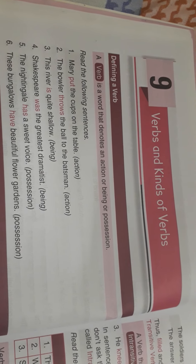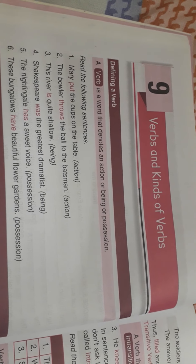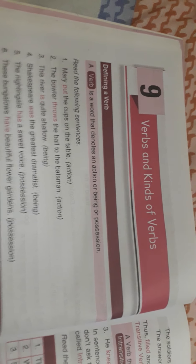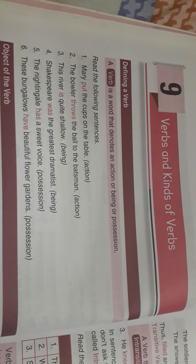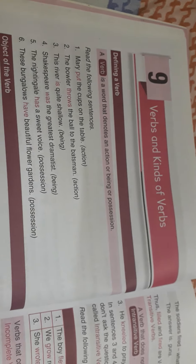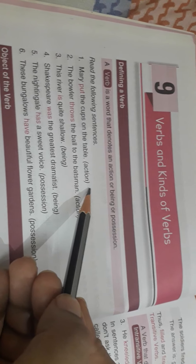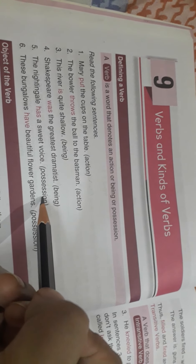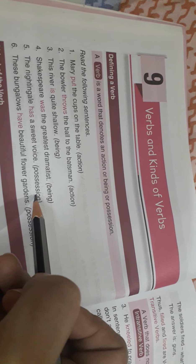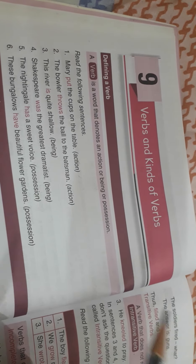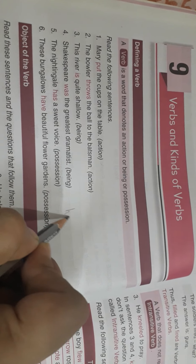A verb is a word that denotes an action, being, or position. Whenever we do some work, that is considered an action. Something possessed by somebody — for example, Seema has curly hair — no action has been done, but 'has' is considered a verb. So 'Seema possessed' will be considered a position.